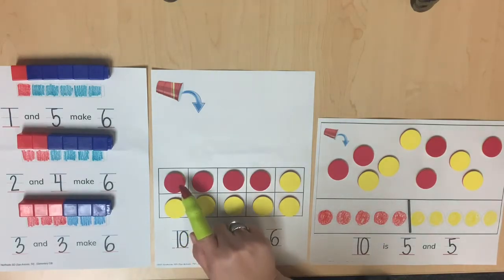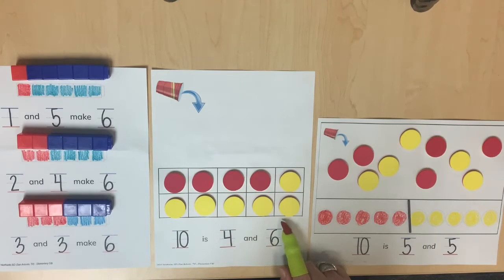Two-color counters, along with ten-frames and part-part-whole mats, are other tools that are appropriate.